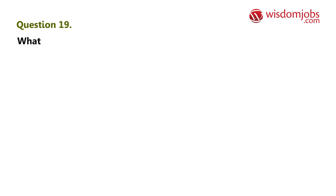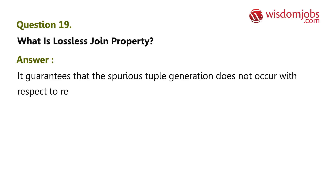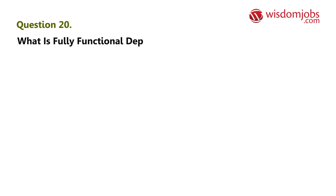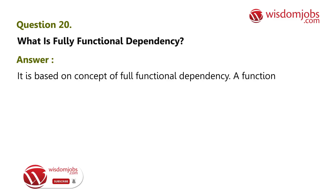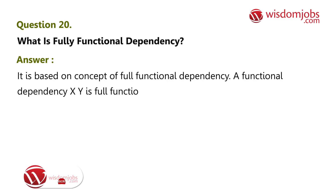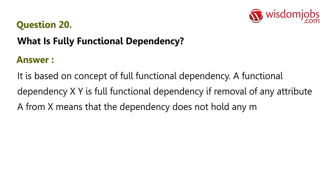Question 19: What is lossless join property? Answer: It guarantees that spurious tuple generation does not occur with respect to relation schemas after decomposition. Question 20: What is fully functional dependency? Answer: A functional dependency X→Y is a full functional dependency if removal of any attribute from X means that the dependency does not hold any more.